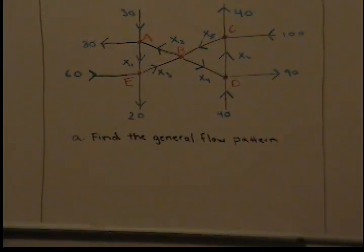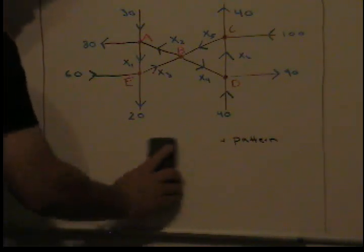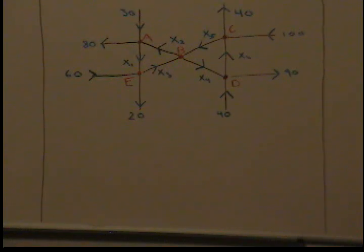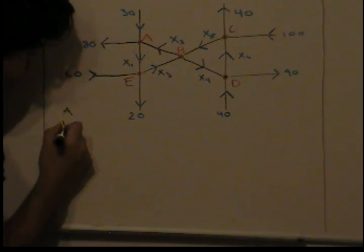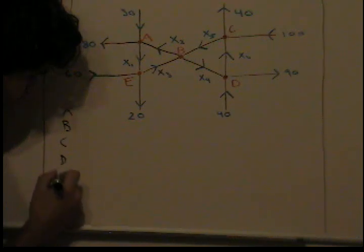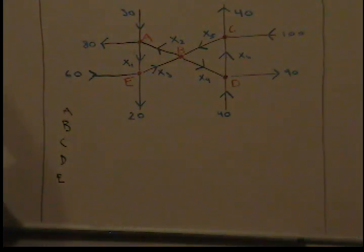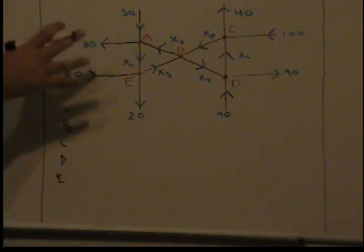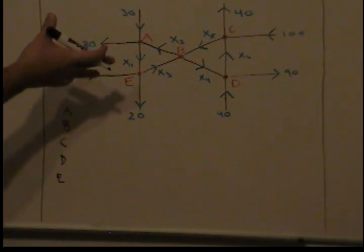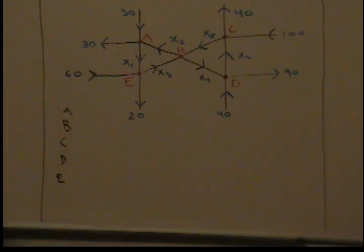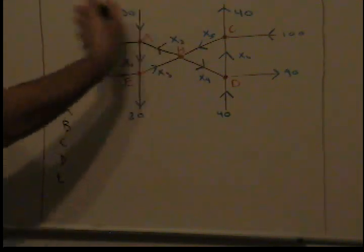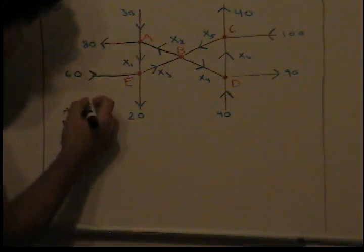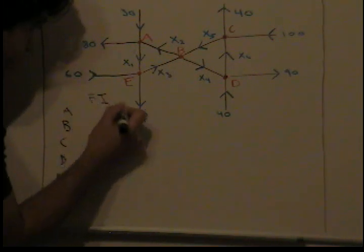We have five nodes: A, B, C, D, and E. The main rule for any network diagram is that total outflow has to equal total inflow. It may not be a realistic situation, but for the network diagram that's a constraint that has to be met. So we have 230 going out and 230 going in — let's call this flow in and flow out.